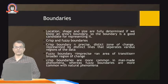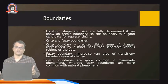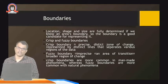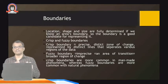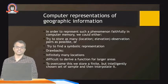Crisp boundaries are more common in man-made phenomena, whereas fuzzy boundaries are more common with natural phenomena. For man-made phenomena like roads, the boundaries are crisp because they only change when we widen the road. Fuzzy boundaries occur in natural phenomena — for instance, an area with different types of flowers where the boundaries of particular flower types keep changing.